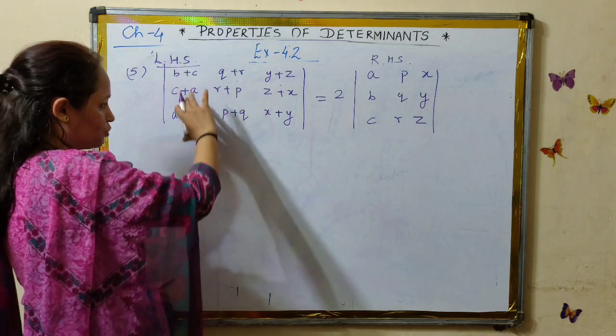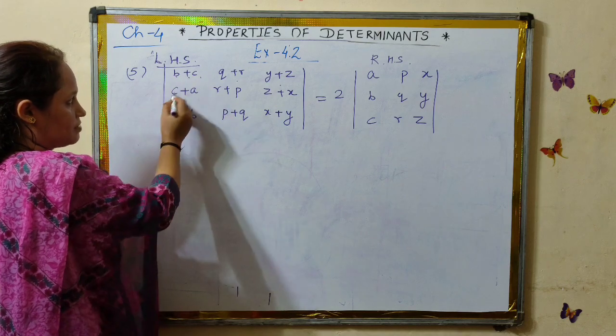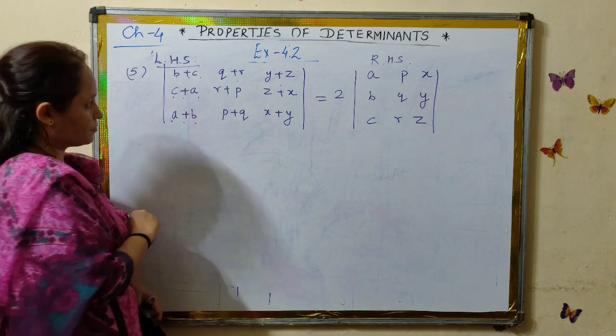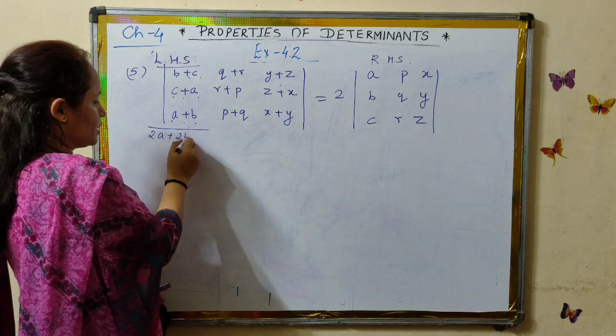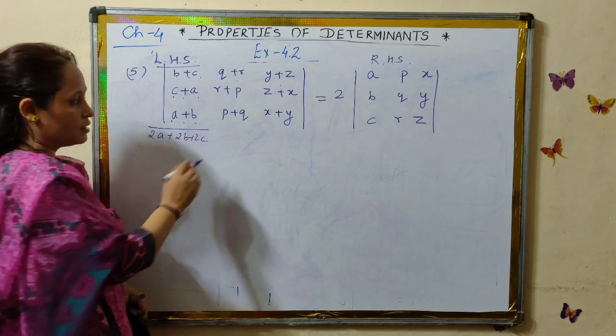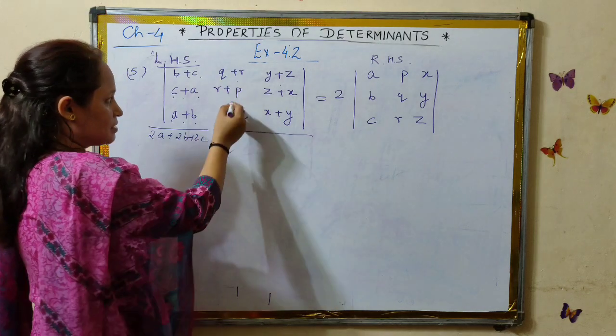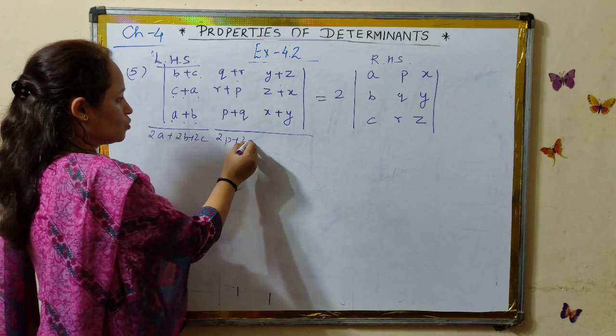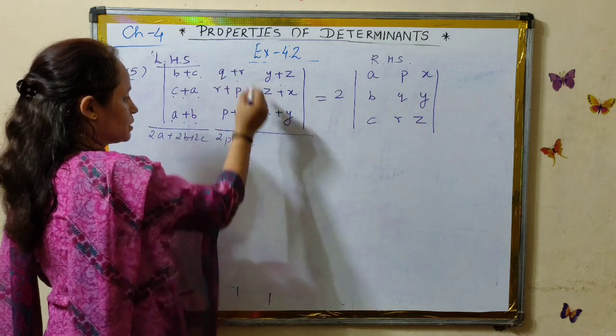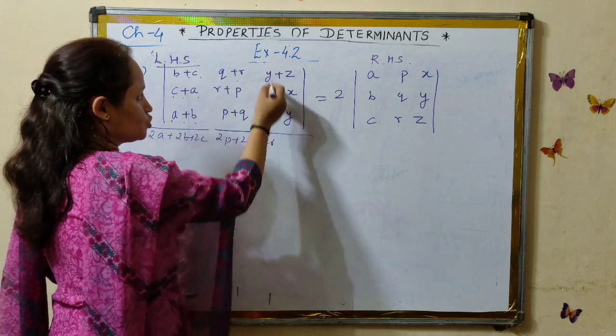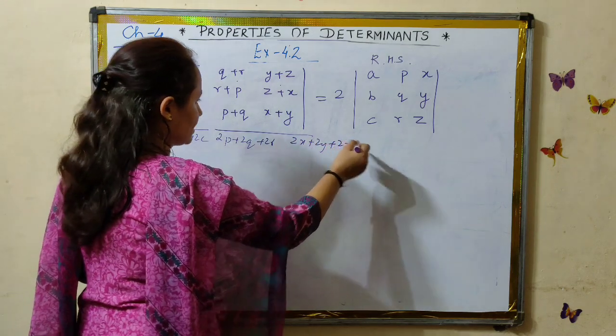If we add all three rows, what do we get? B plus C, C plus A, A plus B. What do you get when you add all three rows? We get 2A plus 2B plus 2C. It's rough work for understanding purpose. Similarly, add the remaining two also here rows wise. 2P plus 2Q plus 2R. There you get 2X plus 2Y plus 2Z.